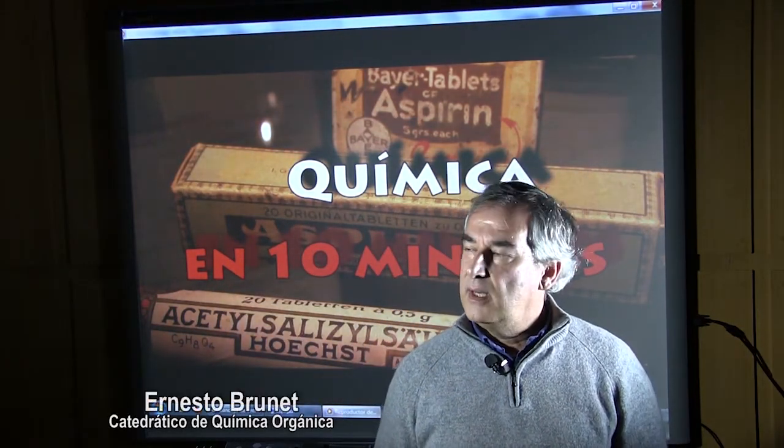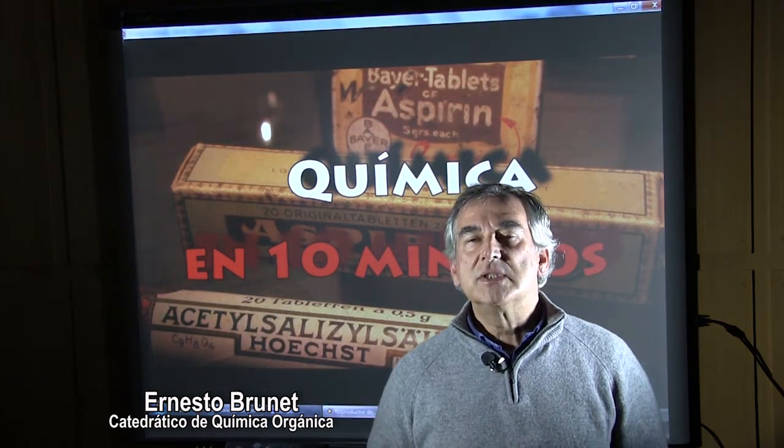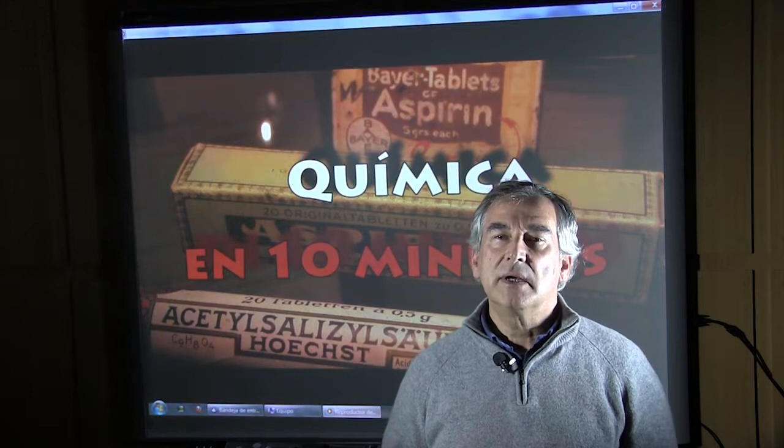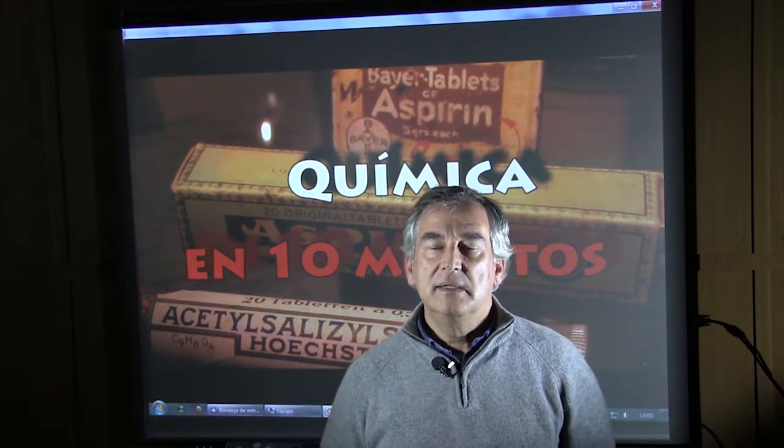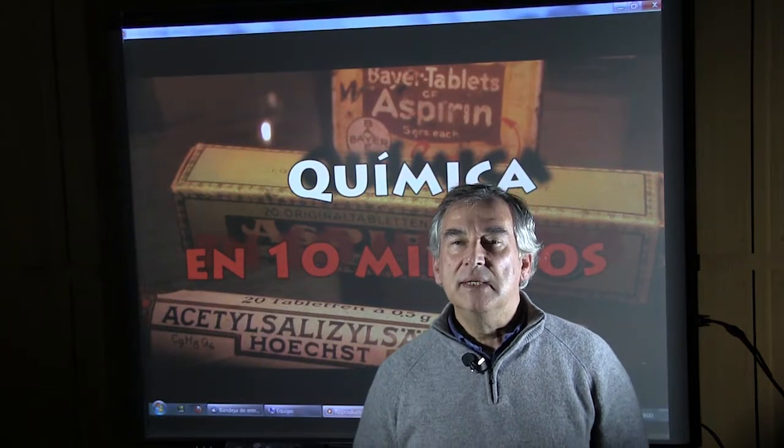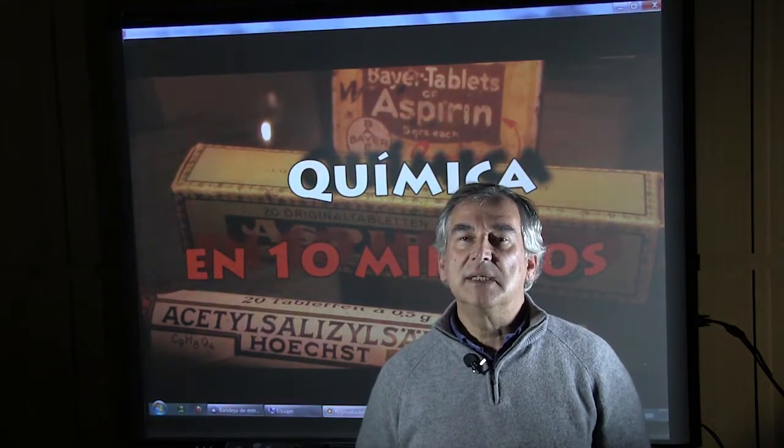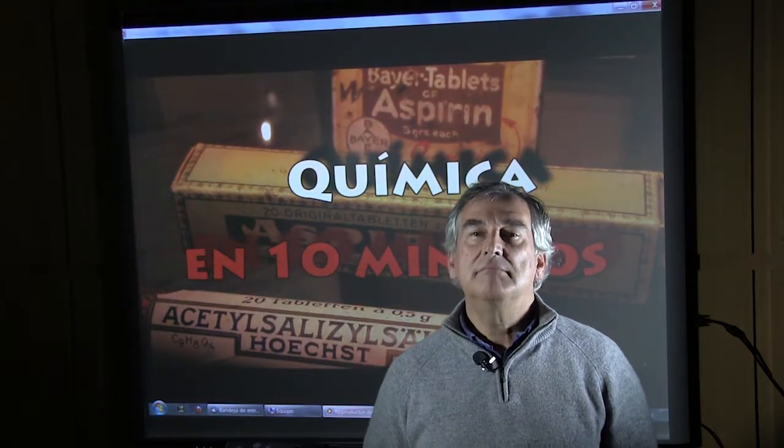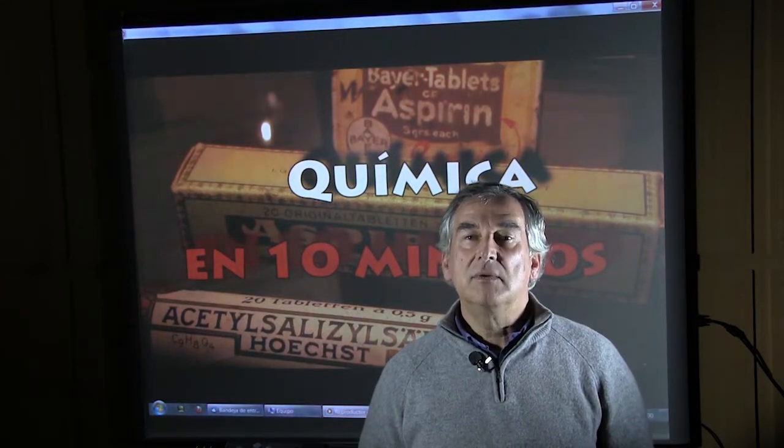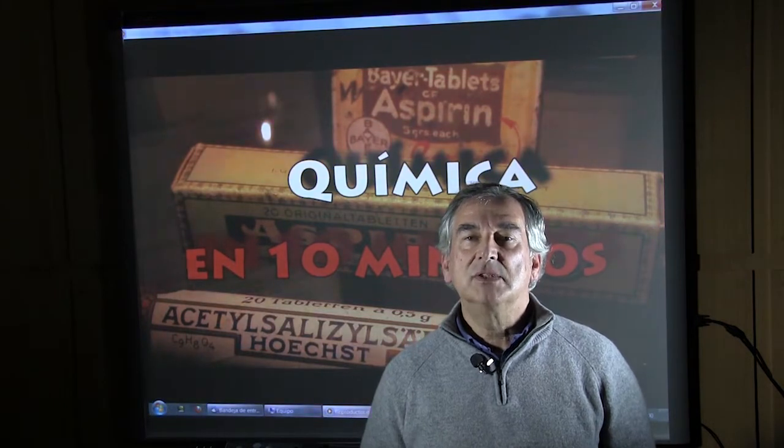In this chapter of Chemistry in 10 Minutes, we are going to learn how a sample is made to record a nuclear magnetic resonance spectra, the first step in the determination of the structure of a chemical compound. We shall see as well some of the features of a nuclear magnetic resonance spectrometer. Come along with me, let's go to the lab. Let's start the demo.